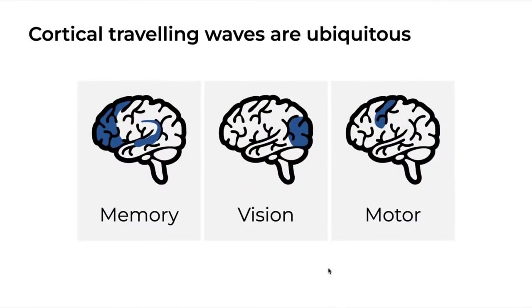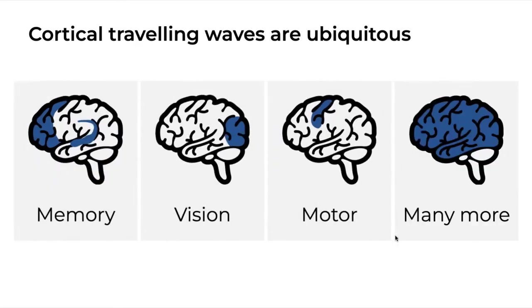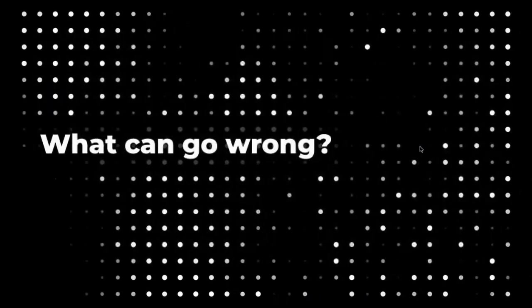Overall, we have found that cortical traveling waves are ubiquitous throughout the brain. They have a significant role in certain processes such as memory, visual perception, and information transfer in the motor cortex. Many other studies have investigated their function throughout the cortex.